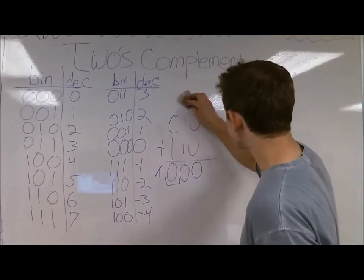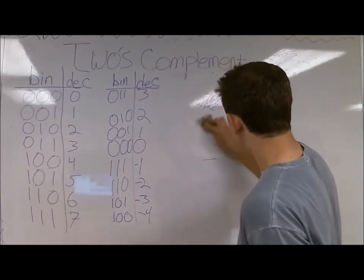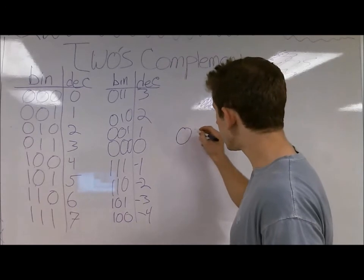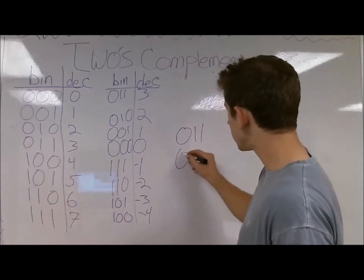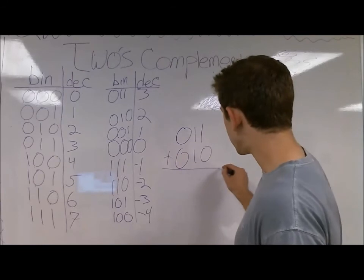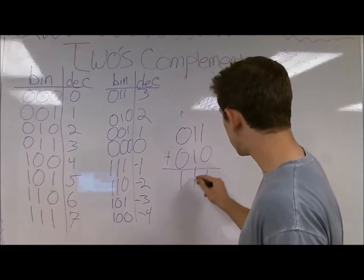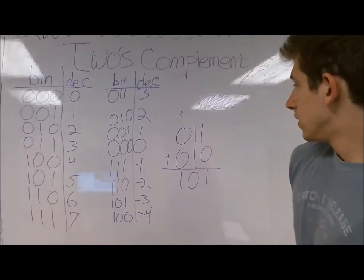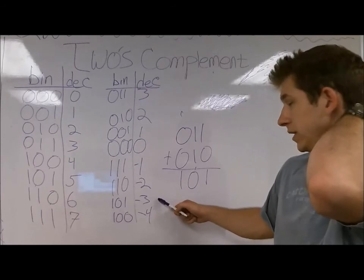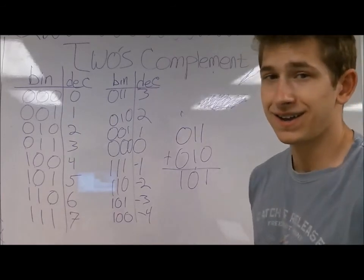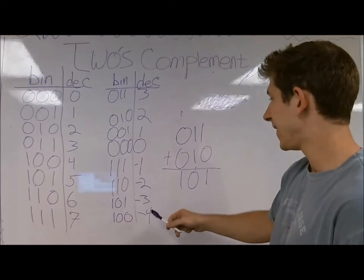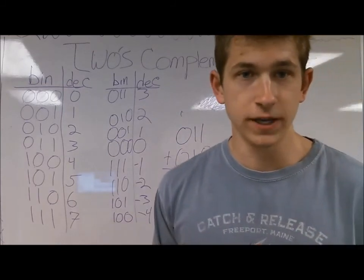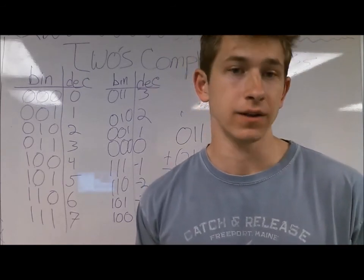Let's say we add 2 and 3. 0, 1, 1, and 0, 1, 0. If we add these together, we're going to end up with 1, 0, 1. 1, 0, 1 is negative 3. How do we add a positive 2 and a positive 3 and get a negative 3? Well, this is what we call overflow. It's what happens when you add two positive numbers and you end up with a negative number as a result.